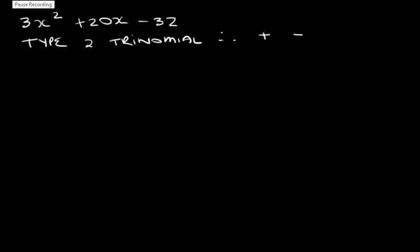So let's look at our next example. We have 3x² + 20x - 32. Now this is a type 2 trinomial because the last term is negative, which means we'll have a plus minus in our answer. What is our first step? Our first step is to multiply the first term and the last term. That gives us 96.